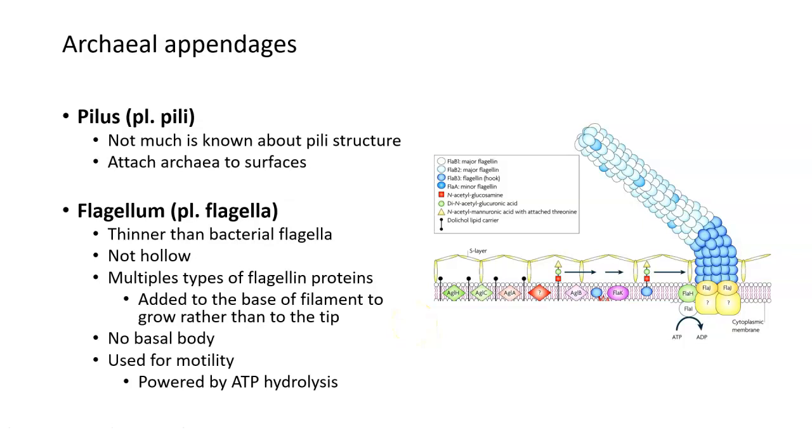There's no basal bodies or structure that actually helps attach the flagella into the cell wall in archaea, as there is in bacteria. But they do use their flagella for the same purpose that bacteria use theirs for, which is motility or movement. They don't use the same type of energy to drive this movement. Bacterial flagella use proton motive force to cause this filament area to spin and power that movement. Archaea use ATP hydrolysis to power their flagella to spin and cause movement for them.